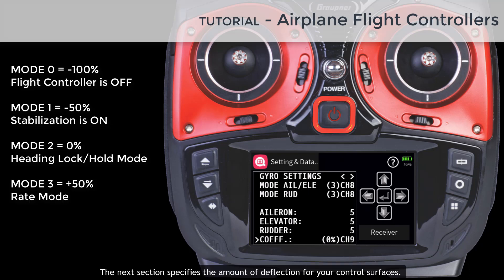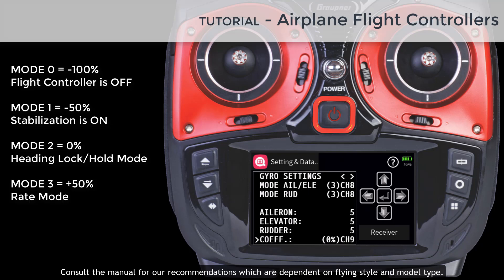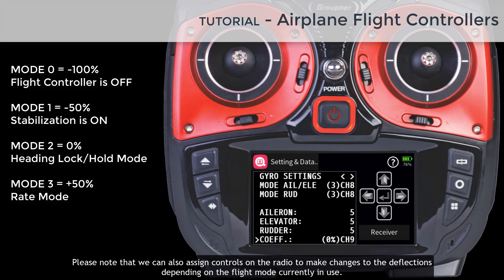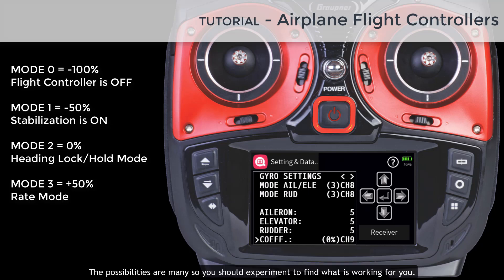The next section specifies the amount of deflection for your control surfaces. Consult the manual for recommendations which are dependent on flying style and model type. The default values are great for sport flying and should be your starting point before making any changes. We can also assign controls on the radio to adjust deflections depending on the flight mode — for example, increasing deflection for 3D flight in rate mode, or increasing rudder deflection in hold mode during landing. The possibilities are many so you should experiment to find what works for you.